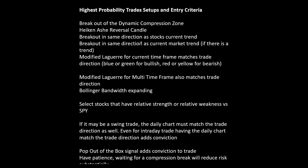What we look for in the Compass Room options room is the highest probability trade setups and entry criteria. We look for breakouts of what's called a dynamic compression zone that the Compass System creates, and we're looking for Heiken Ashi reversal candles. Heiken Ashi candles smooth out the direction of the trend, and a reversal candle for a long would have a wick on the prior candle and a flat bottom on the current candle.